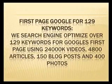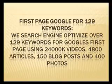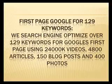We also include the first page of Google for 129 keywords. We search engine optimize over 129 keywords for Google's first page using 24,000 videos, 4,800 articles, 150 blog posts, and 400 photos.